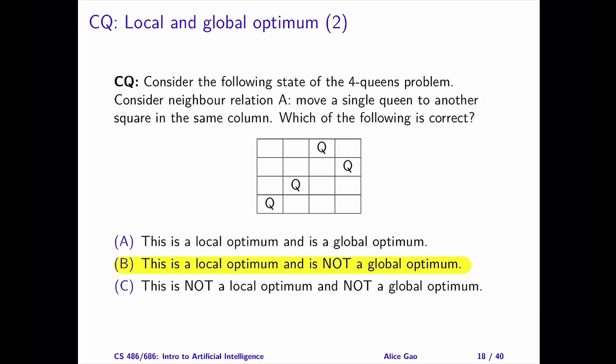Question 2. Consider the same state but a different neighbor relation. This neighbor relation says to choose one queen and move it to another row in the same column. The correct answer is B. This state is a local optimum but not a global optimum.